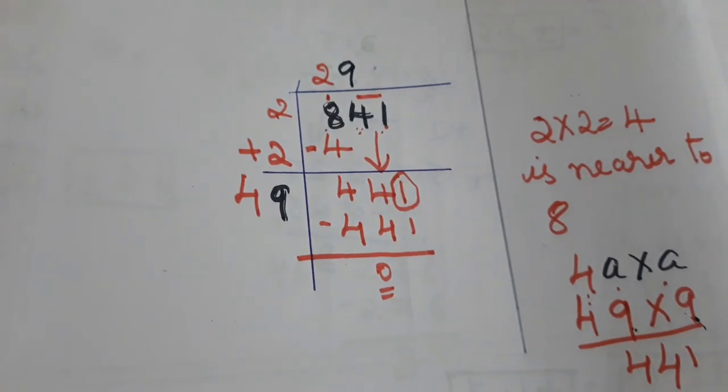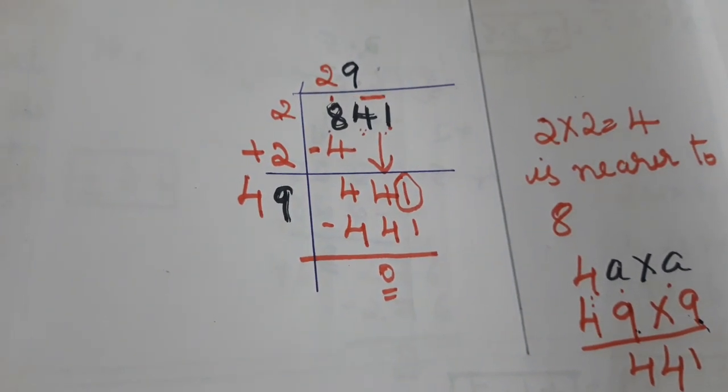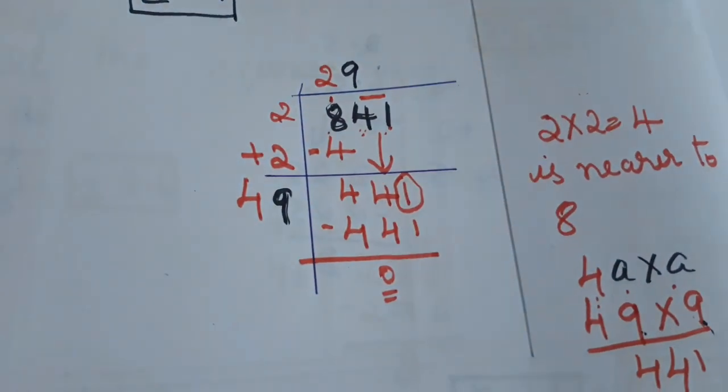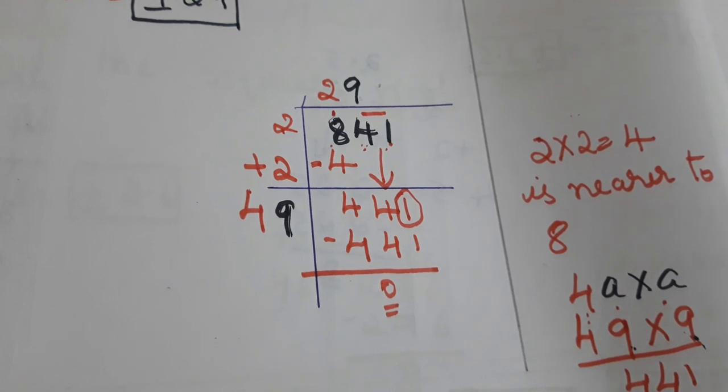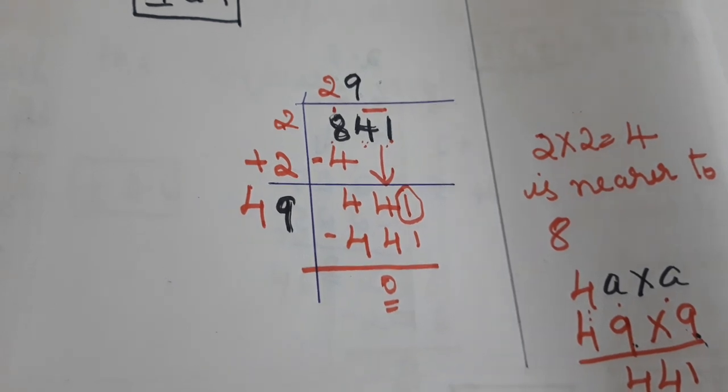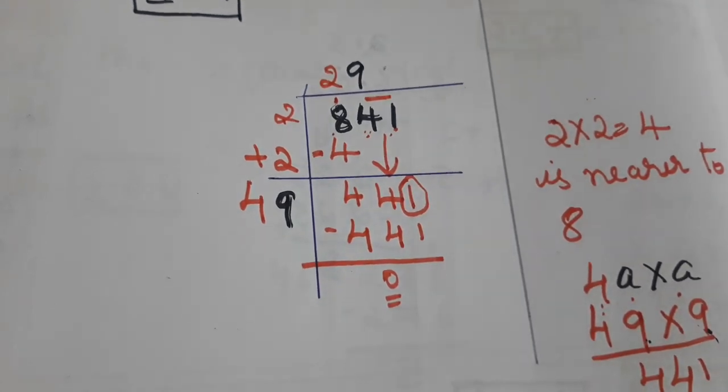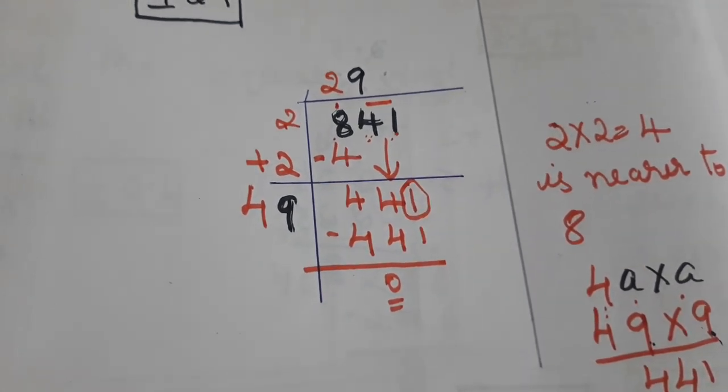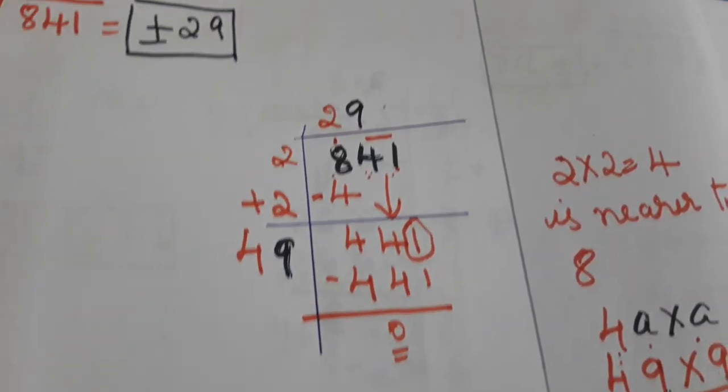So the answer is plus or minus 29. I am using a different pen to make it easier to understand — you may write with any single pen. The answer is plus or minus 29.